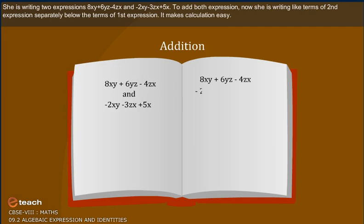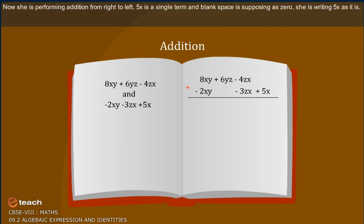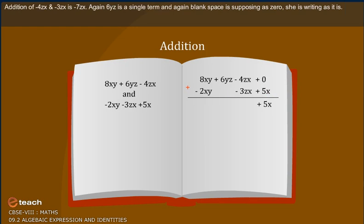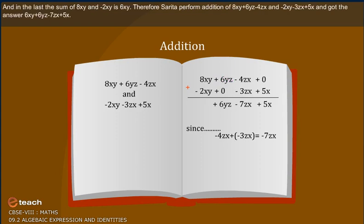She is writing like terms of the second expression separately below the terms of the first expression. It makes calculation easy. Now she is performing addition from right to left. 5x is a single term and the blank space is supposed as 0. She writes 5x as it is. Addition of minus 4zx and minus 3zx is minus 7zx. Again, 6yz is a single term and the blank space is supposed as 0, so she writes it as it is.